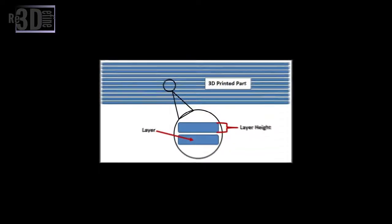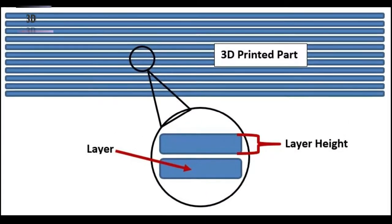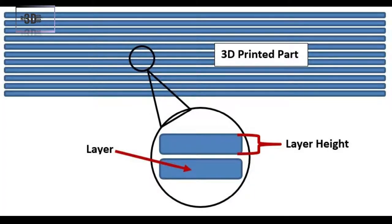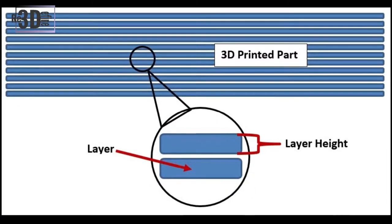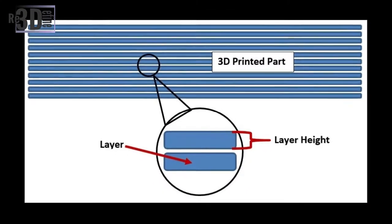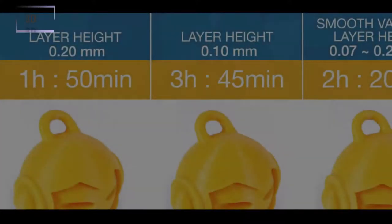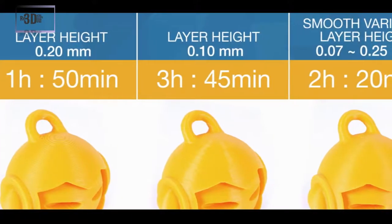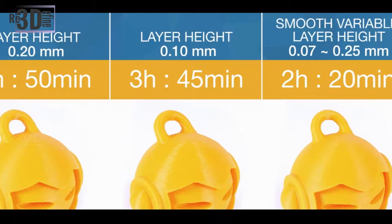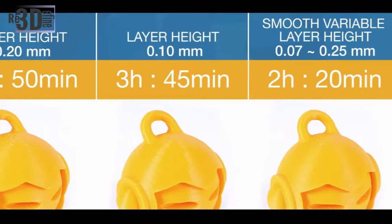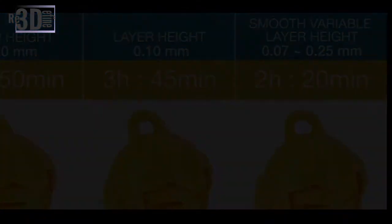All 3D printing processes build parts layer by layer due to the additive nature of 3D printing. The thickness of each layer determines the resolution of the printed object in a similar way as pixels determine the quality and resolution of an image. Lower layer height typically results in parts with smoother surfaces. The downside is that with a lower layer height, the print time is very long.